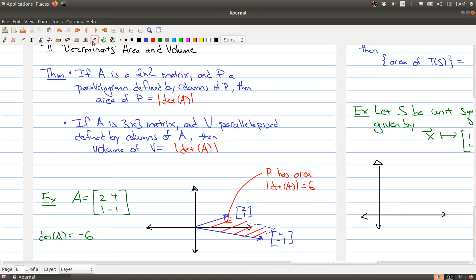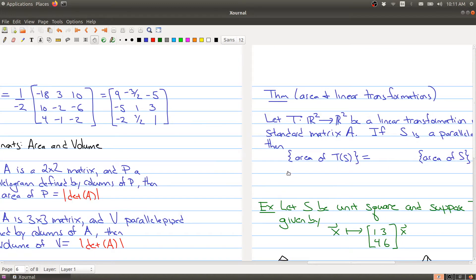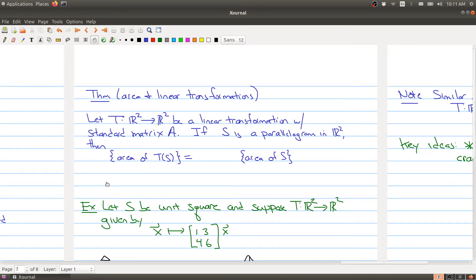Now, this number is also kind of useful when you're looking at linear transformations. So here we have a linear transformation from R2 to R2. And because it's a linear transformation, it's actually given by some sort of matrix. And if S is some sort of parallelogram in R2, you're starting over here and you're looking at an object. And then you stick it into your function and you're going to get another parallelogram on the other side.